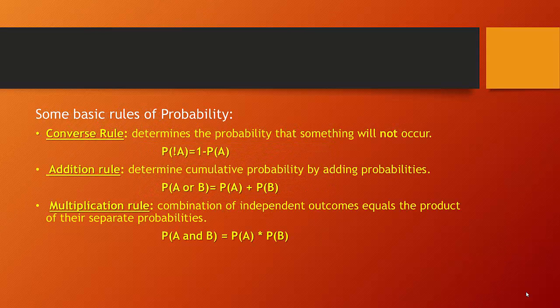There are a number of basic rules when thinking about probability, all of which can be applied to understanding probability curves. The converse rule determines the probability that something will not occur. The formula says that the probability of not being event A is equal to 1 minus the probability of event A. So imagine that event A has a 30% chance of happening — there's a 70% chance that event will not happen.